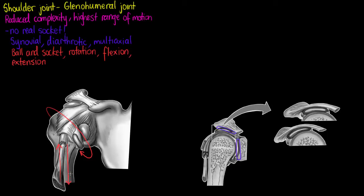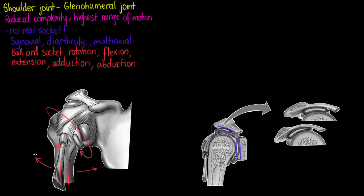A better definition: flexion is decreasing the angle of the joint, usually along the sagittal plane, and extension is increasing the angle of the joint. Our next type of movement is abduction and adduction. With adduction we can think of it as adding on to the body — moving the arm towards our midline. With abduction we are taking it away from the body, lifting our arms outward to the side. And the last movement is circumduction — circling your arm in a giant circle like a propeller.